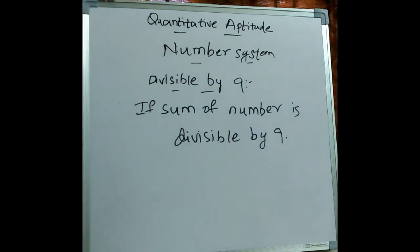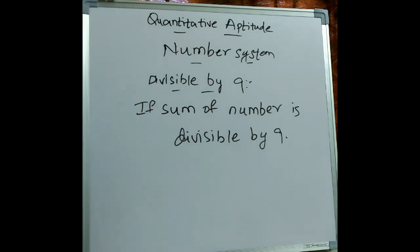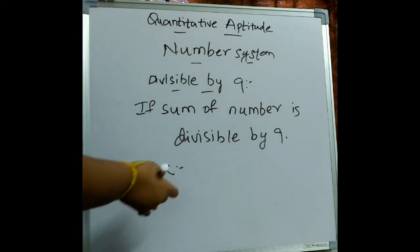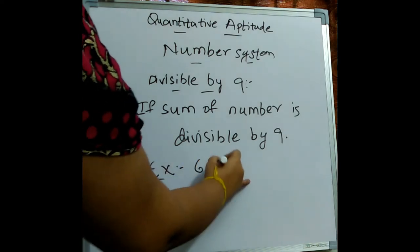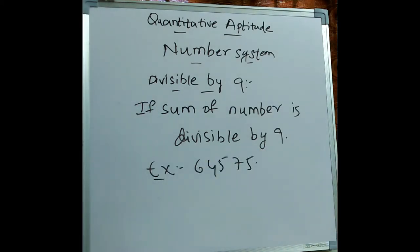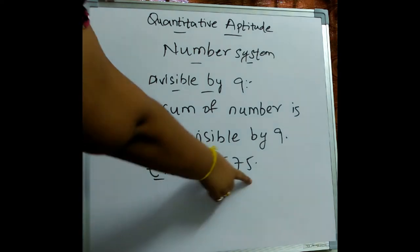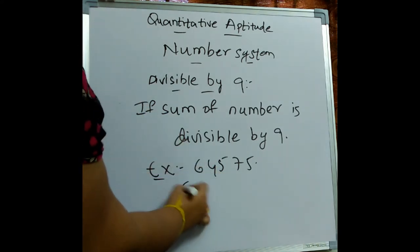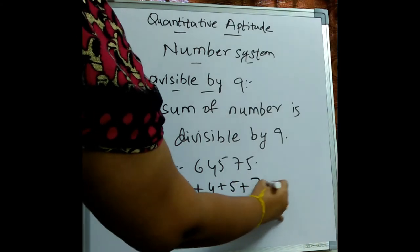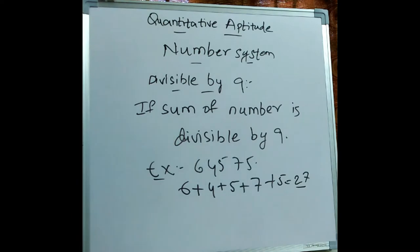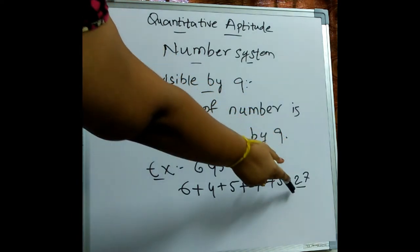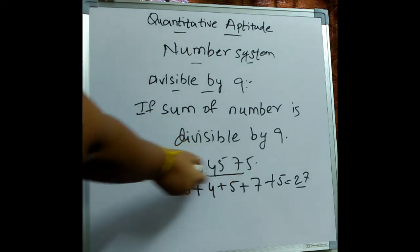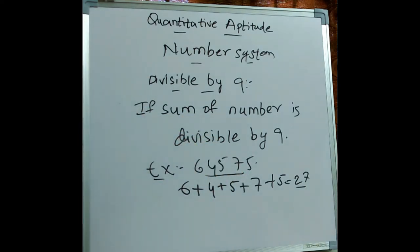Now let's see what is the rule to check whether a number is divisible by 9. If the sum of the digits of the number is divisible by 9, then the full number is also divisible by 9. For example, take 64575. The sum of the digits is 6 plus 4 plus 5 plus 7 plus 5, which gives us 27. Since 27 is divisible by 9, the number 64575 is also divisible by 9.